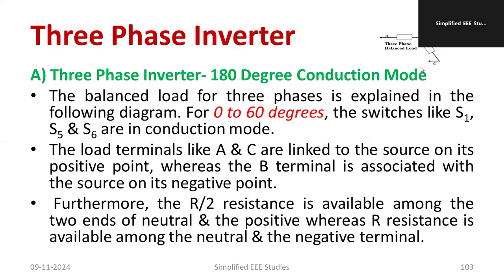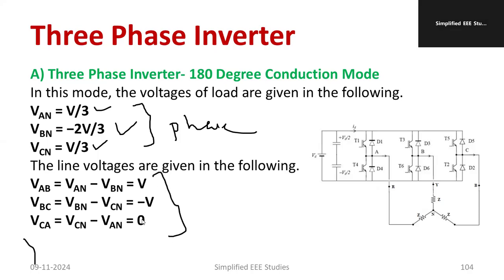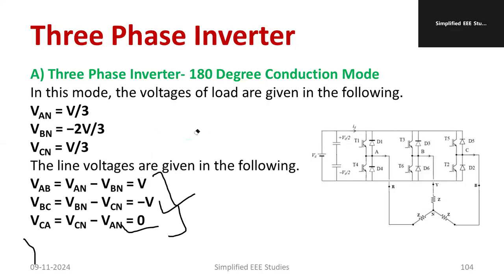This is the pattern of how the switches get conducted. For the input voltage in the first interval: VAN equals V/3, VBN equals minus 2V/3, and VCN equals V/3. VAN, VBN, and VCN all represent phase voltages. For line voltage, VAB equals VAN minus VBN, which equals V. Similarly VBC equals VBN minus VCN, and VCA equals VCN minus VAN, which equals 0. This analysis should be performed by referring to the circuit diagram.